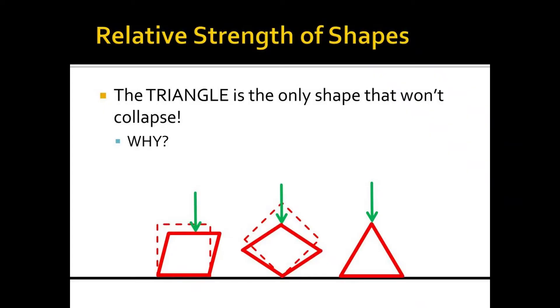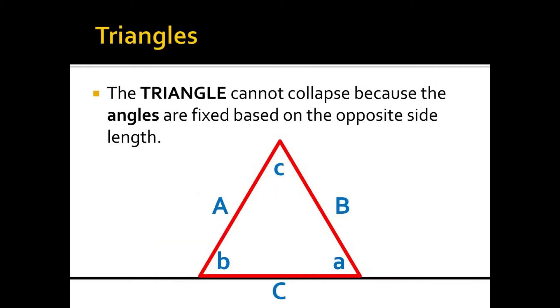If we were to apply downward force on these three shapes, the triangle is the only shape that won't collapse. Why is this? Well, it's all to do with angles and how they're fixed based on the opposite side length. Hence why we see the triangle in most structures in the world today.